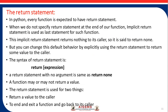In the return statement in Python, every function is expected to have a return statement. When we do not specify a return statement at the end of our function, an implicit return statement is used as the last statement for such a function. This implicit return statement returns nothing to its caller — it is said to return None. The syntax is: return statement with an optional expression in brackets. The return statement with no element is the same as return None. The function may or may not return a value. The return statement is used for two things: to return a value to the caller, and to exit the function and go back to the caller.